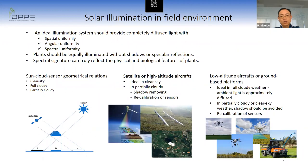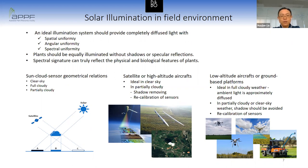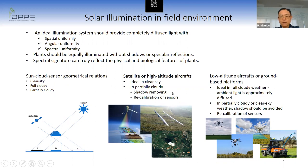An ideal illumination system should provide completely diffused light with spatial, angular, and spectral uniformity. A plant should be equally illuminated without shadow or specular reflectance, so that the spectral signature can truly reflect the physical and biological features. In field environments using solar illumination, the sun-cloud-sensor geometrical relationship must be considered. This includes three types of conditions: clear sky, fully cloudy, and partially cloudy. For satellite and higher altitude aircraft, the ideal condition is clear sky, and for cloudy weather, shadow removal techniques and sensor recalibration should be applied.